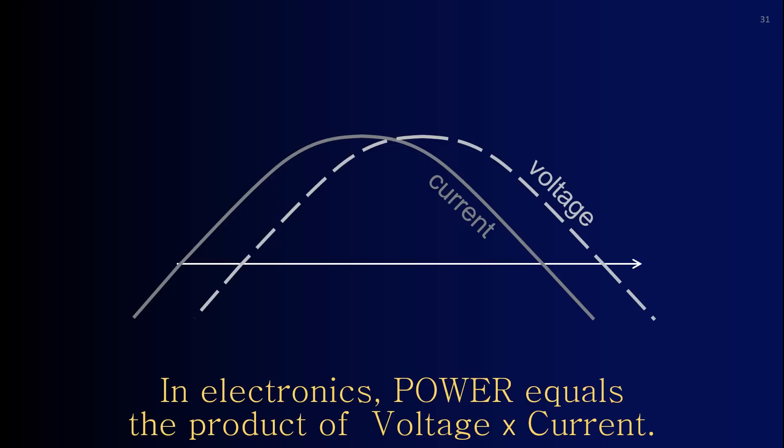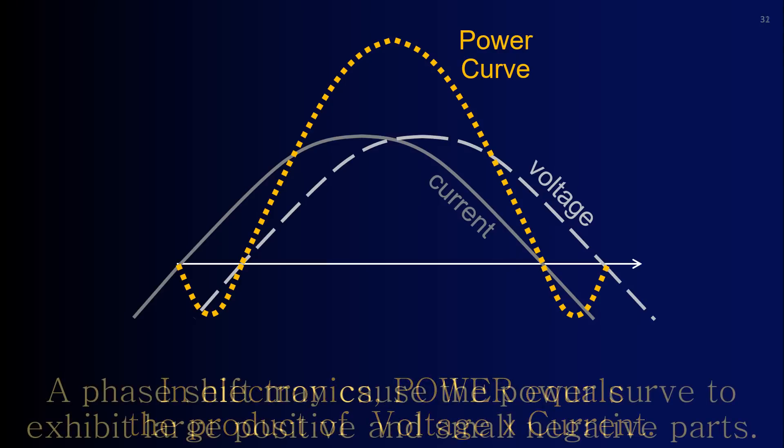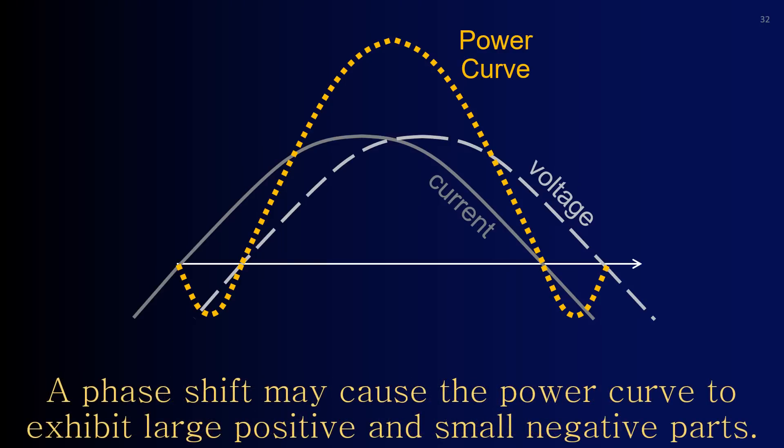In electronics, power equals the product of voltage times current. A phase shift may cause the power curve to exhibit large positive and small negative parts.